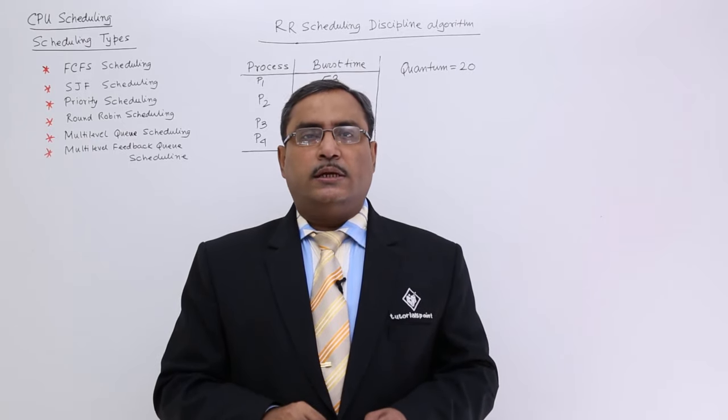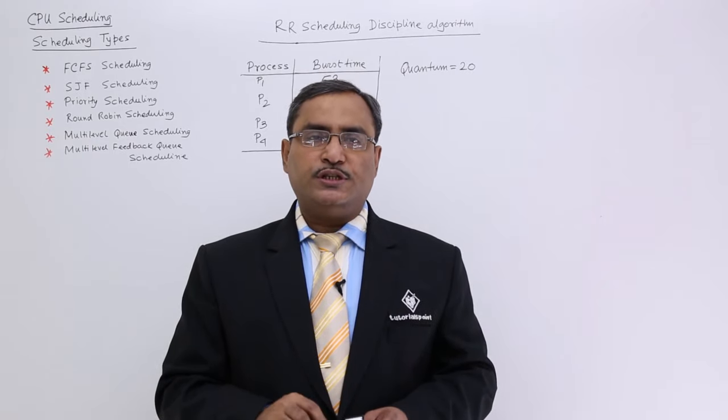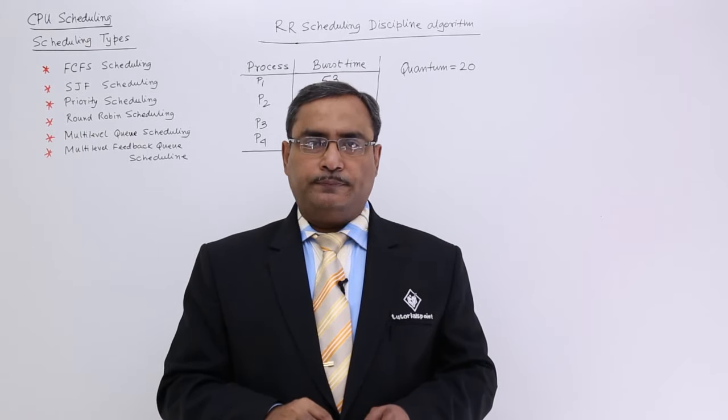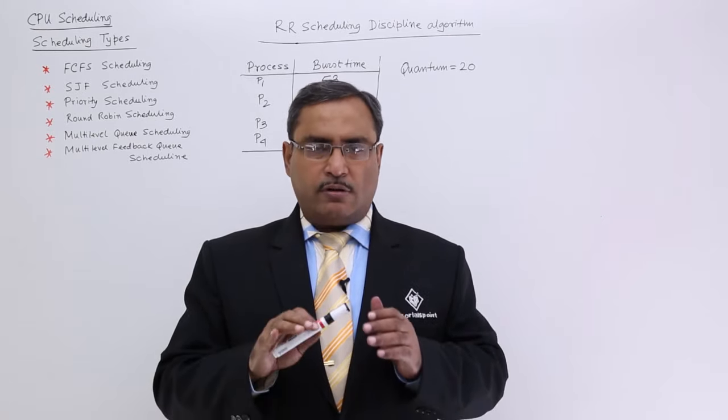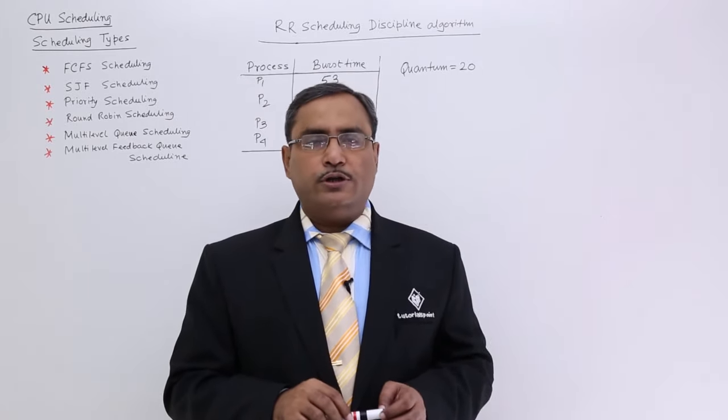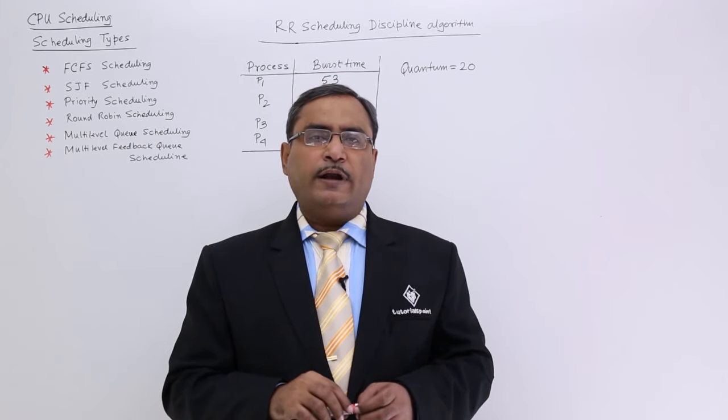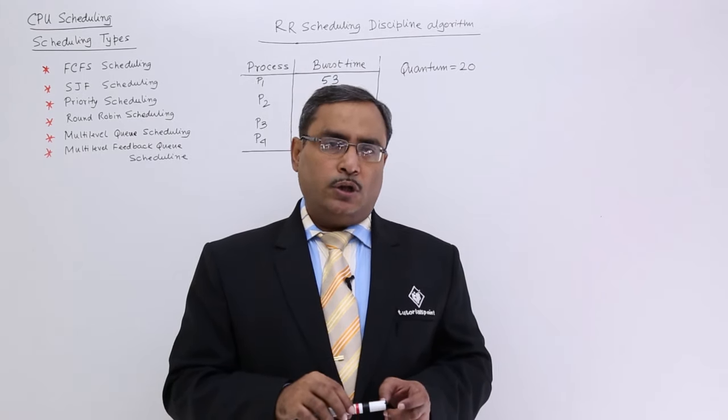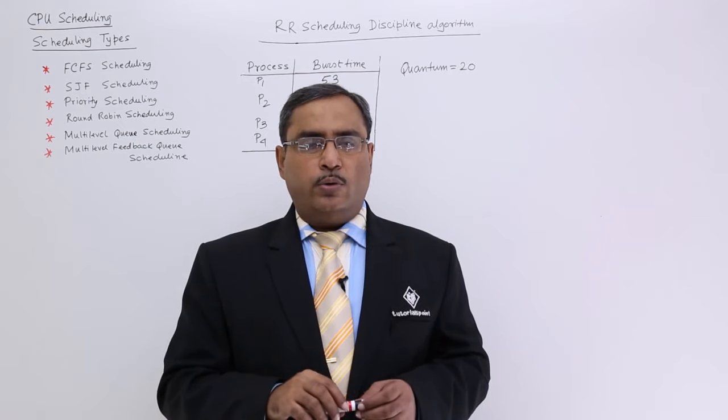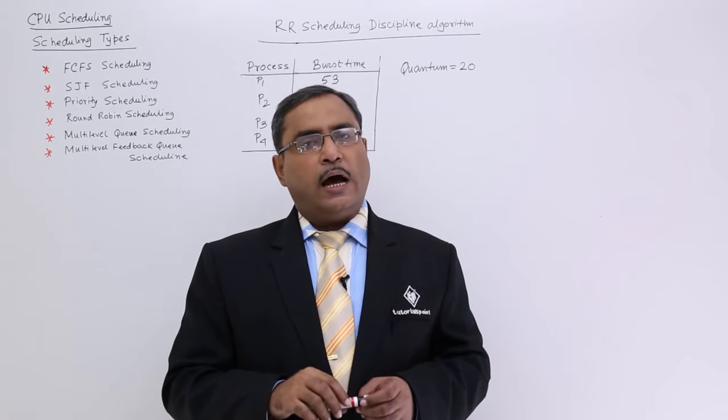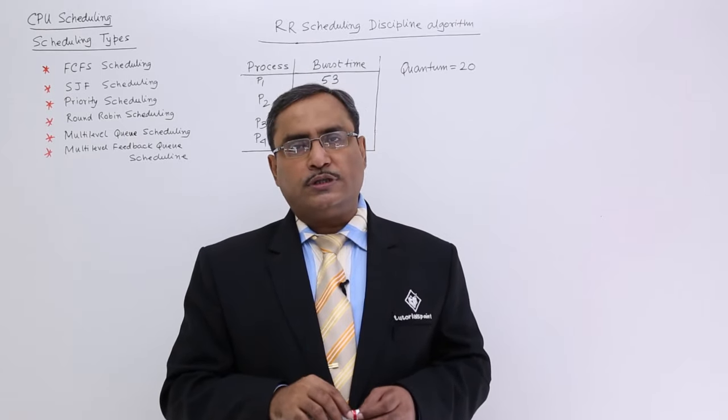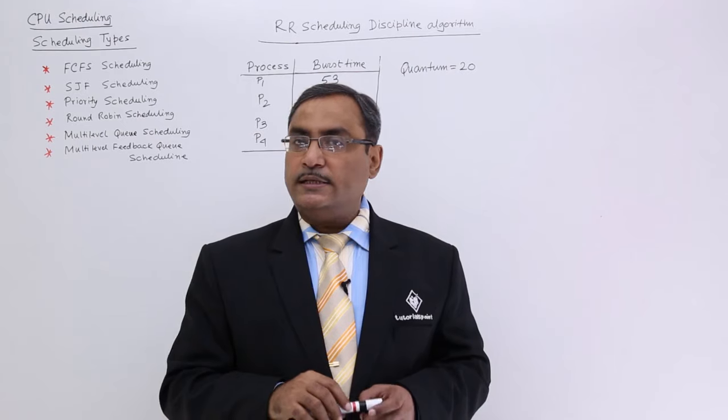In this session, we are going to discuss round robin CPU scheduling discipline with one numerical problem. Before going for this round robin scheduling, let me tell you what was the disadvantage with priority scheduling. The main disadvantage with priority scheduling will be that those processes which will have the priority lower will be suffering starvation.